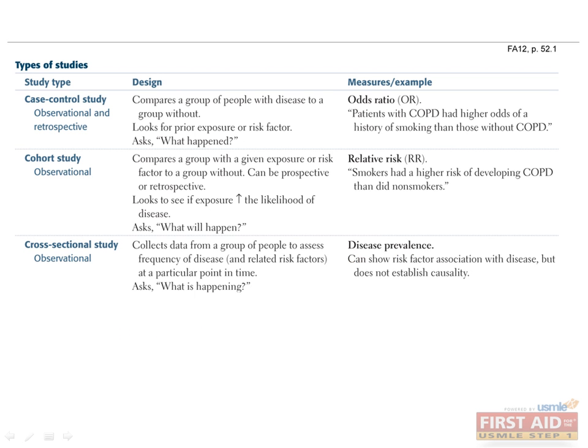A cross-sectional study is purely observational and asks what is happening because it takes place in the present time. It collects data from a group of people to assess the frequency of disease and related risk factors at a particular point in time. It is a snapshot study design — it gathers data about exposures and outcomes simultaneously. While it can show risk factor association with disease, it does not establish causality. The characteristic measure for cross-sectional studies is disease prevalence.